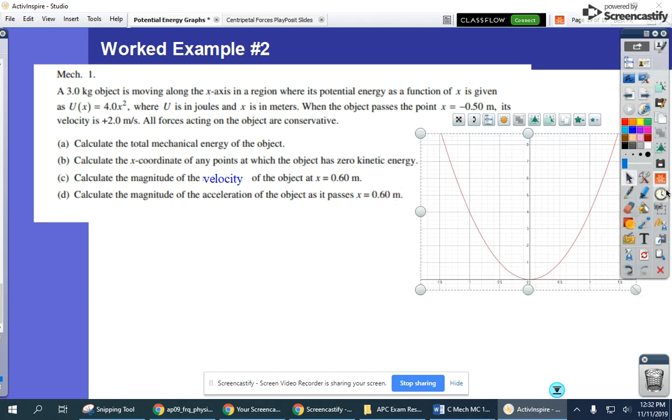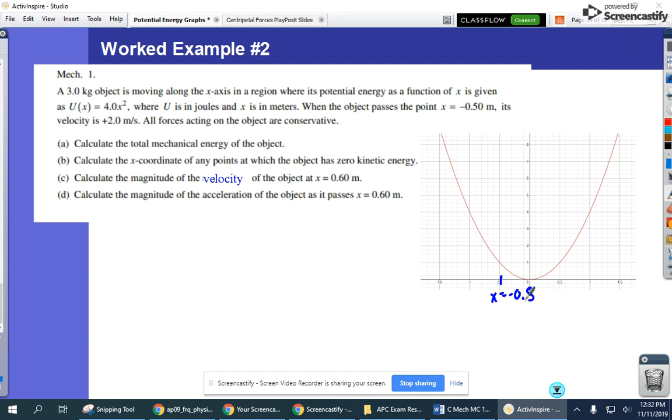When the object passes the point negative 0.5 meters, so when we're here at x equals negative 0.5, its velocity is 2 meters per second, positive 2 meters per second. So it's moving to the right. And it wants us to calculate the total mechanical energy of the object. Well, for part A,